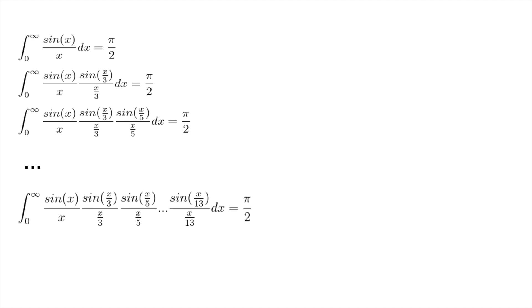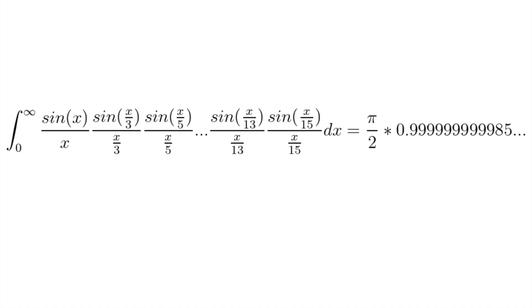But this only works until we get to 15. Up until 15 at 13, it works perfectly, it's exactly equal to π/2. But if you take the integral from 0 to infinity of sin(x)/x, sin(x/3)/(x/3), all the way up to sin(x/15)/(x/15), this integral is not equal to π/2. It is equal to around π/2 times 0.999999999985. So why is this?